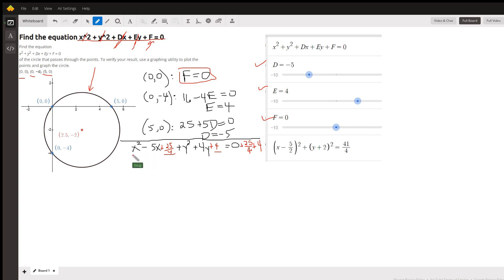Remember, to complete the square on X squared minus 5X, we take half of the minus 5, just minus 5 halves, and square it, 25 fourths.